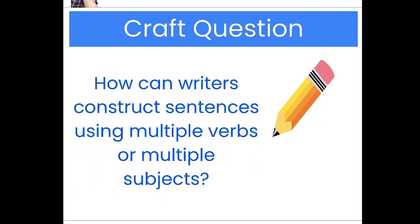Let's echo read. Repeat after me. Our craft question is: how can writers construct sentences using multiple verbs or multiple subjects? There are some tricky words in there. We have the word construct and the word multiple. Construct means to put sentences together, or write sentences. And multiple shows up multiple times — it means more than one.